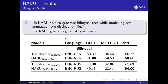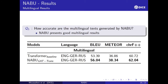For the second research question, NABU generates good bilingual results. For English and German, NABU outperformed the transformer baseline on all metrics. For Russian, NABU outperforms only on chrF; however, chrF is the metric which correlates best with human evaluation. Therefore, we can say NABU was capable of modeling language from distinctive families. For the third research question, NABU presents good multilingual results, outperforming the vanilla transformer baseline on all metrics.